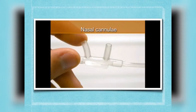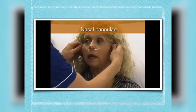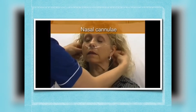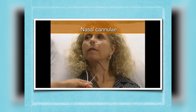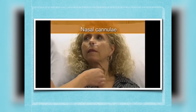A nasal cannula consists of two soft prongs attached to the oxygen supply tubing. The prongs are inserted into the patient's nostrils. The tubing is looped over the patient's ears, and the toggle is adjusted to ensure a good fit.